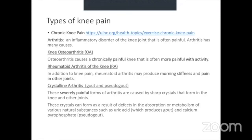The third type of arthritis includes gout and pseudo-gout — severely painful forms caused by sharp crystals that form in the knees and other joints.